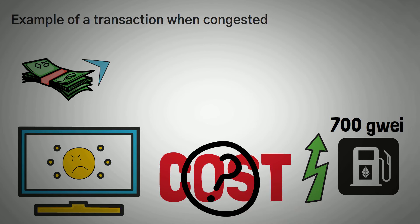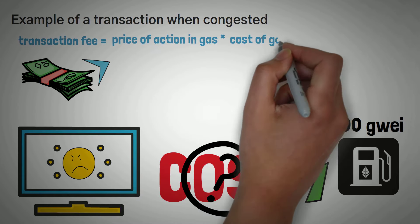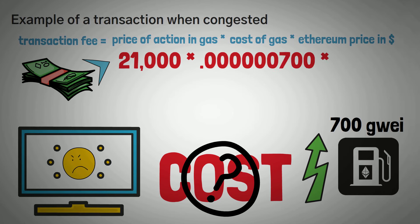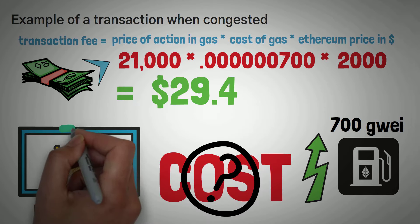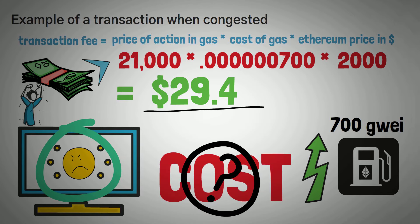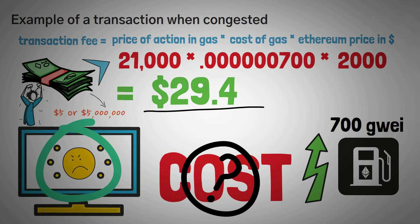To calculate how much it would cost to send your friend some money, we plug in the numbers: price of the action in gas, times the cost of gas in GWEI, times the Ethereum price in dollars. The price of a transaction is still 21,000 gas; the cost of gas is now 700 GWEI, which equals 0.000000700 Ether; and the price of Ethereum is still $2,000. So 21,000 times 0.0000007 times 2,000 gives us a transaction fee of $29.40. That transaction cost is the same whether you're sending $5 or $5 million — and this is both the beauty and the downfall of this system.